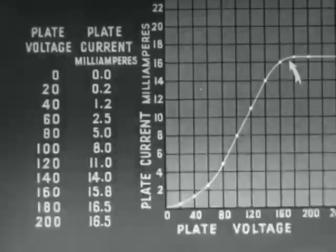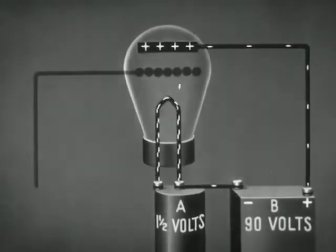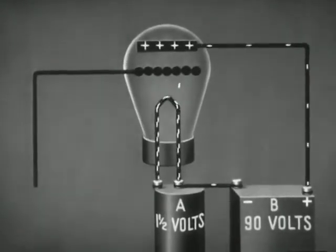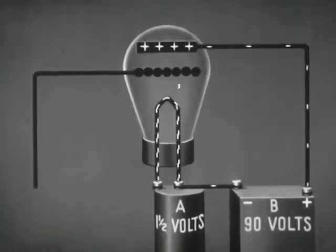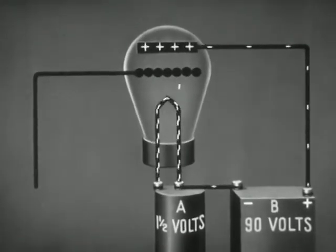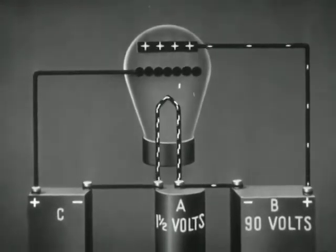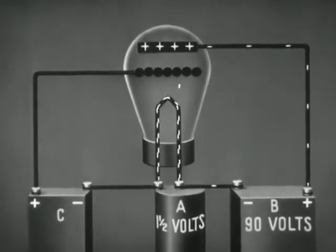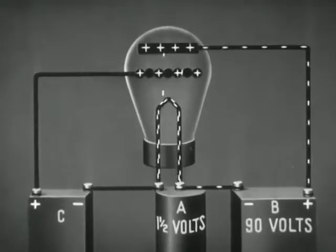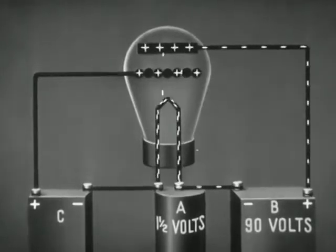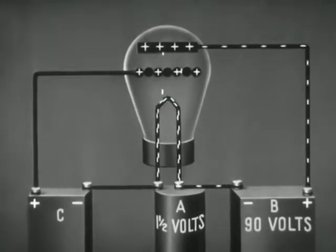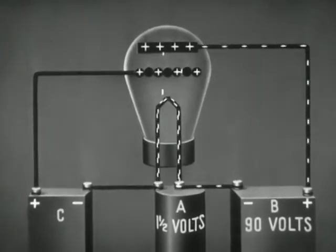A third element of wire mesh called the grid is inserted between the filament and the plate. Now let us connect the battery in the grid circuit so that the grid can be given a large positive charge. The pull of this positive charge is added to that of the plate and more current flows. Electrons moving from the filament to the plate pass through the spaces in the grid.